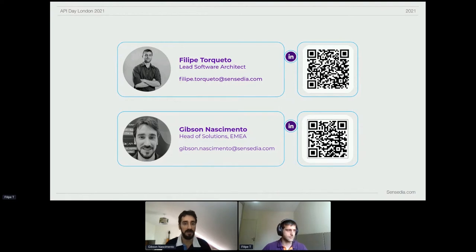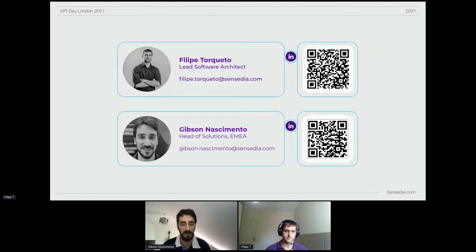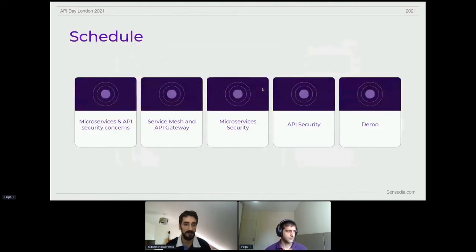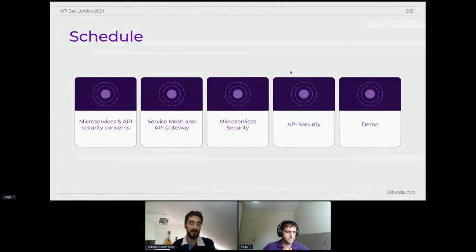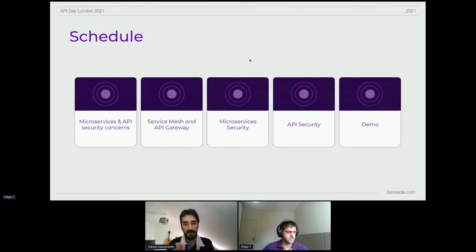The idea here is to show how we can expose microservice APIs while guaranteeing security and making sure they are reliable. For today, we'll do a quick presentation giving context on the security concerns we want to cover for microservices and APIs, the role of service mesh and API gateway, microservices security, API security, and then a demo that will cover all of these aspects.